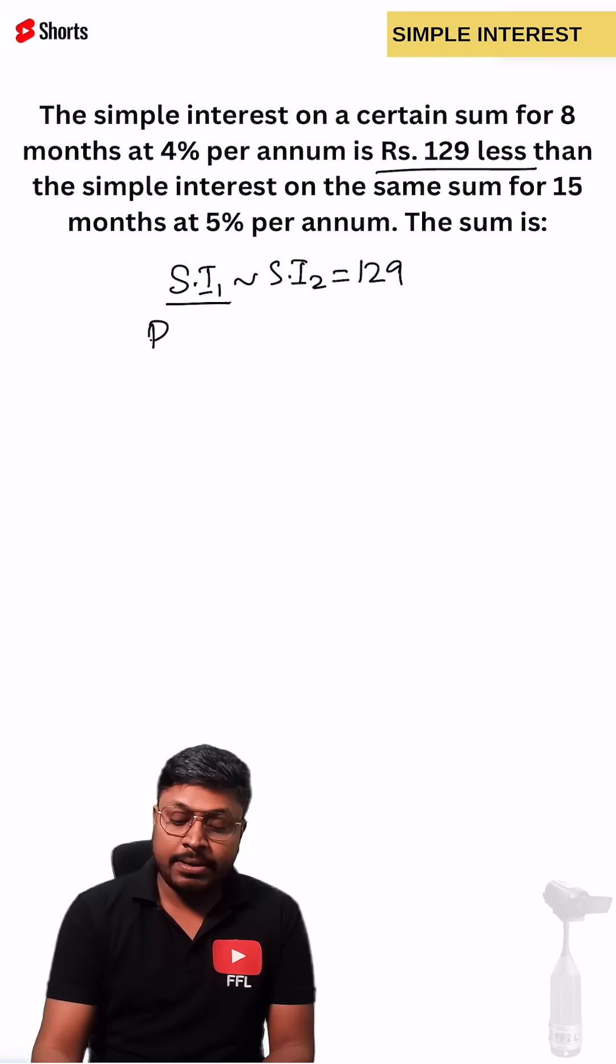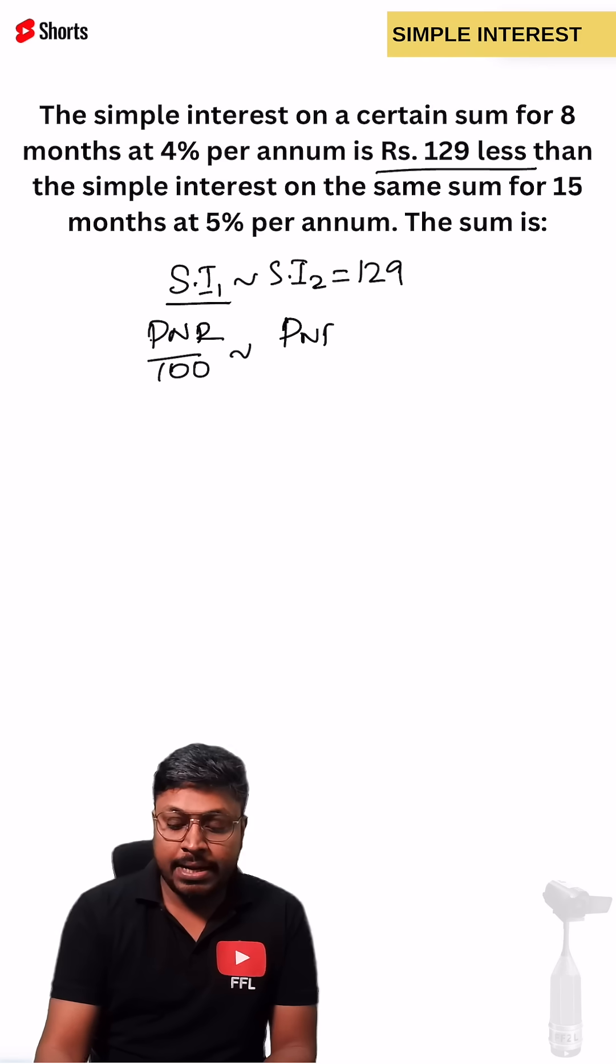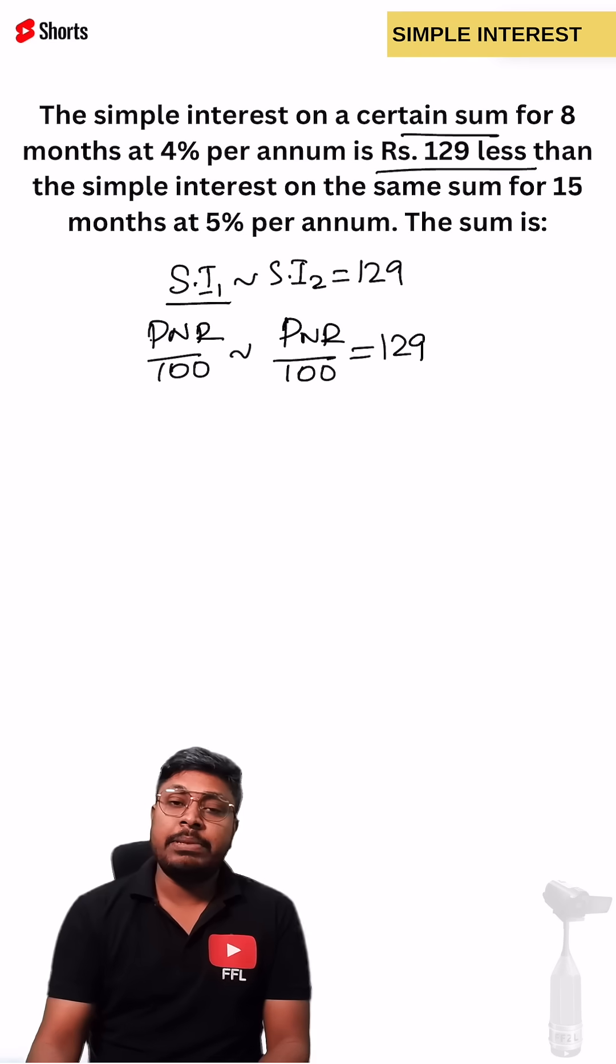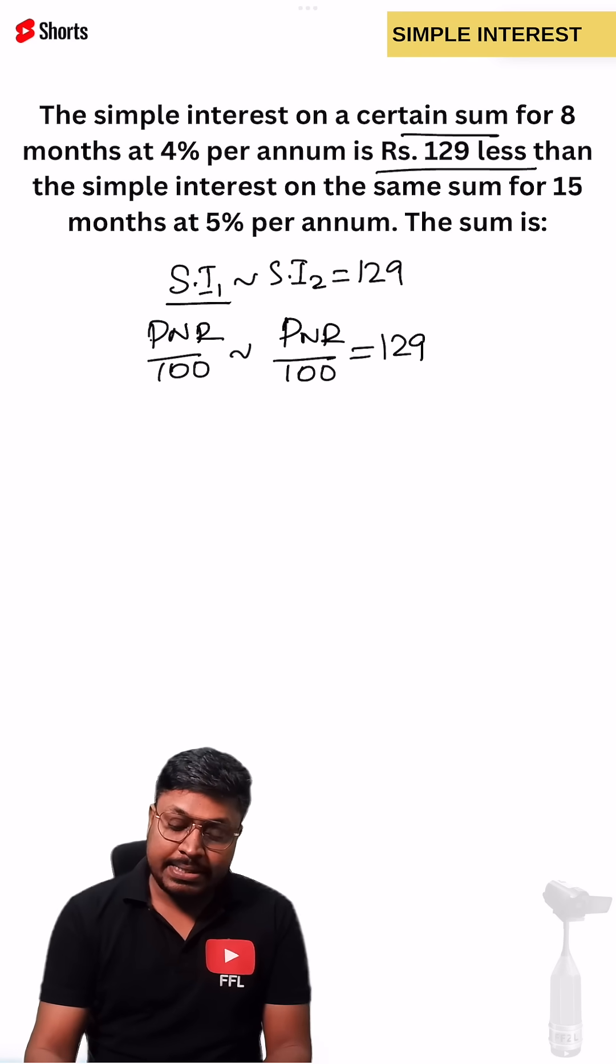So simple interest formula is PNR divided by 100. The difference of PNR divided by 100 equals 129. Here they have invested a certain sum, the principal was not given, so let's take principal outside as common. We can take this 100 also common.